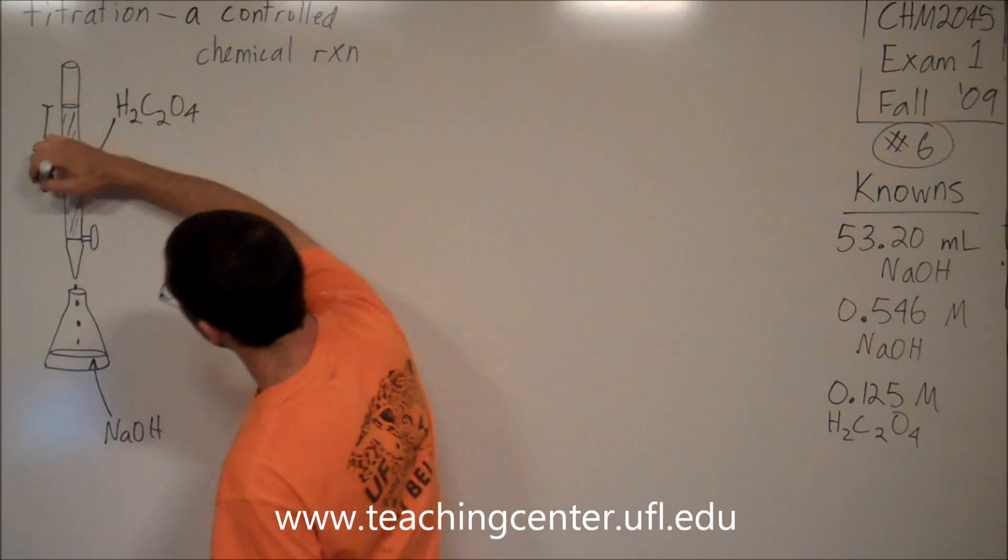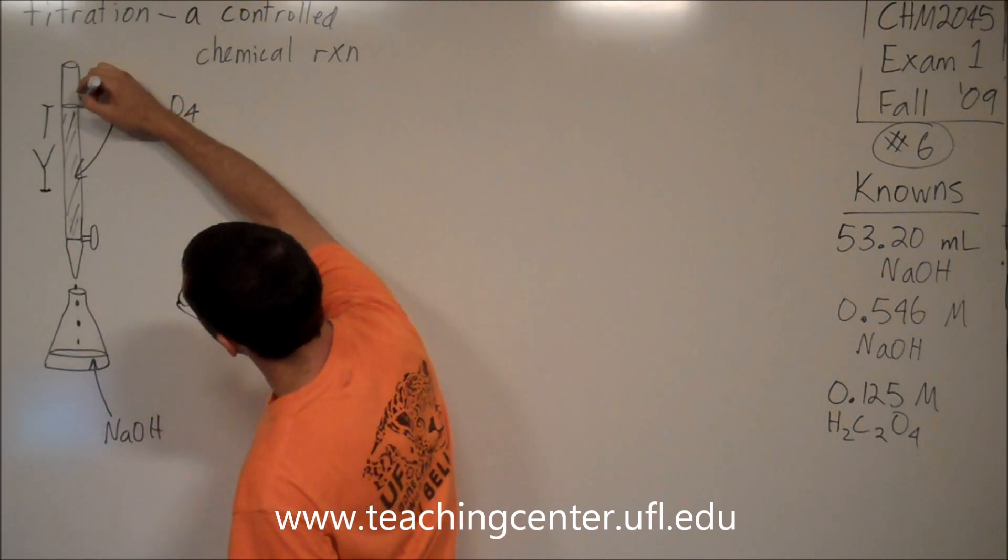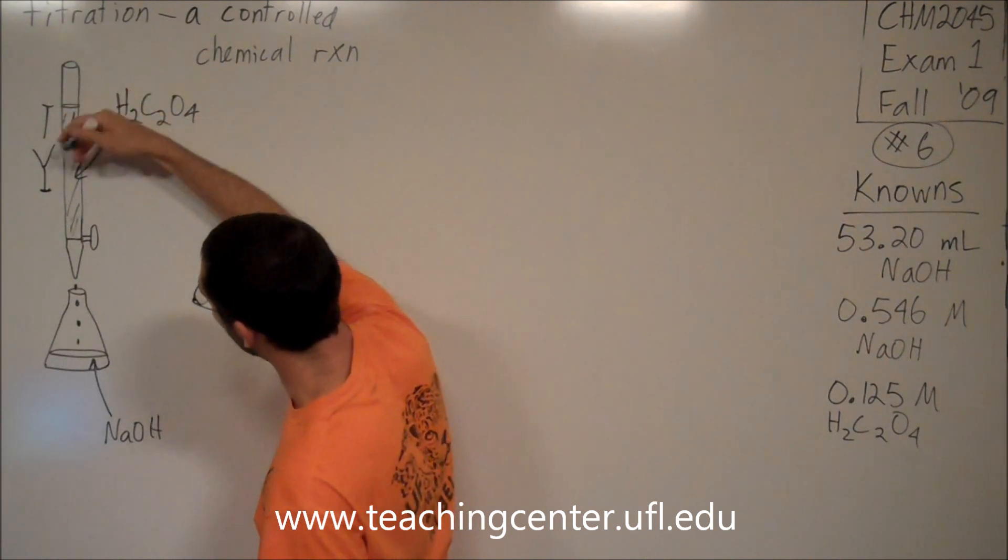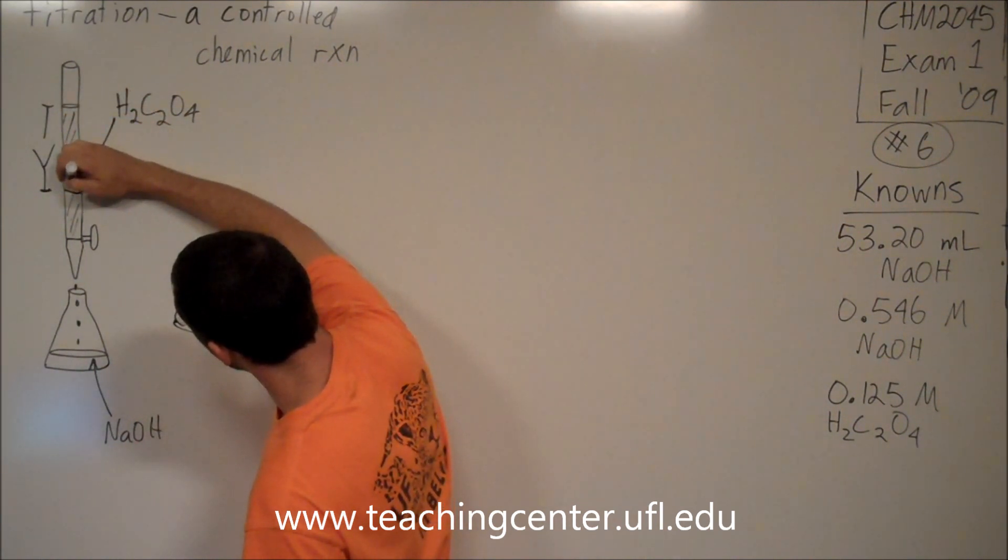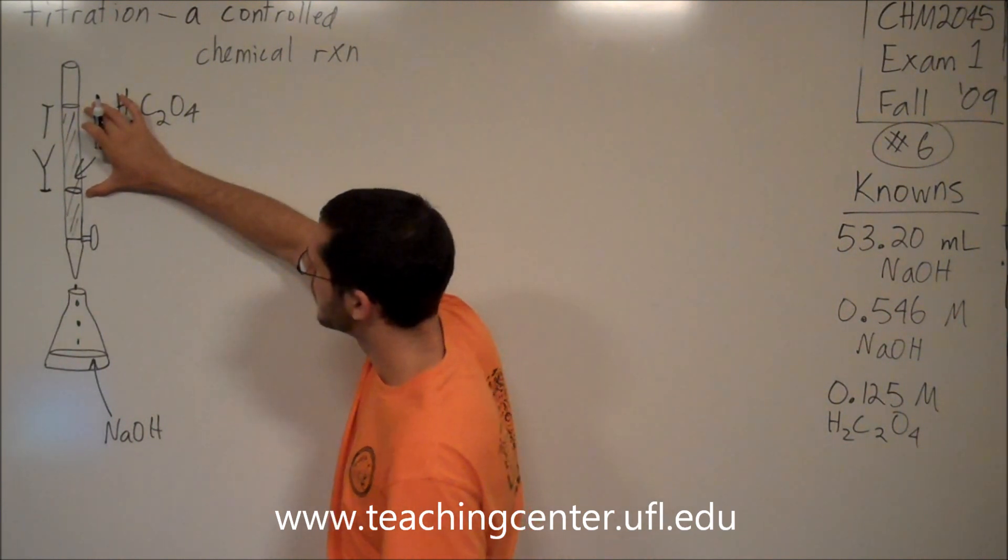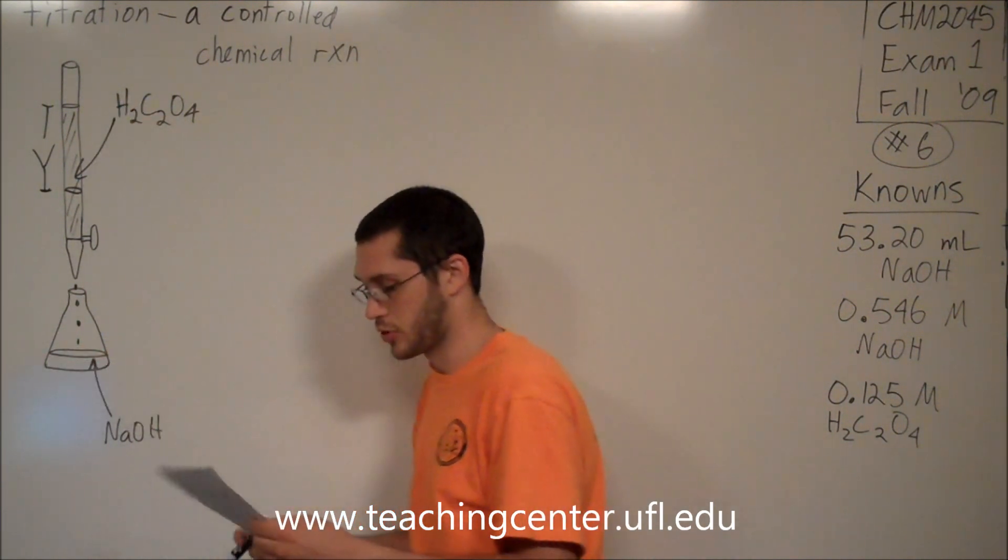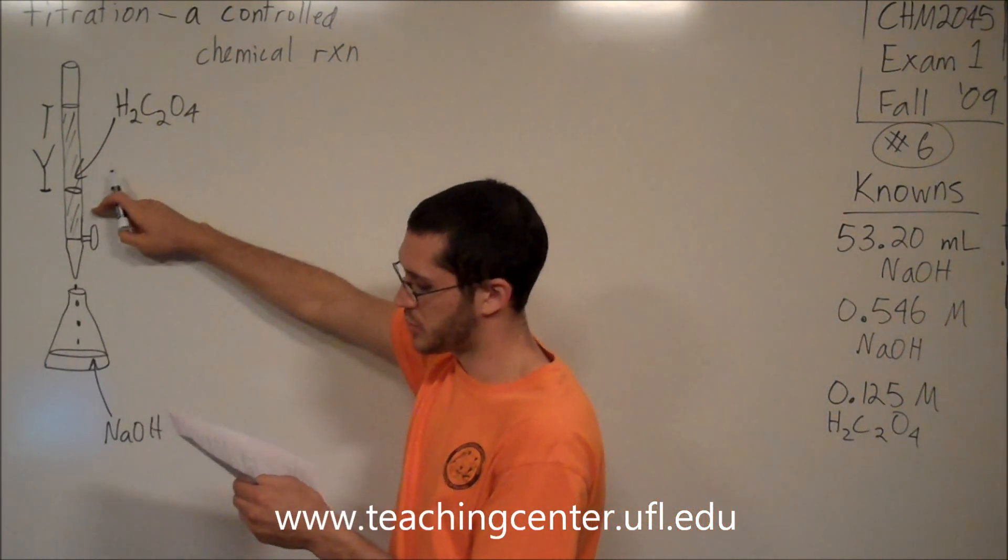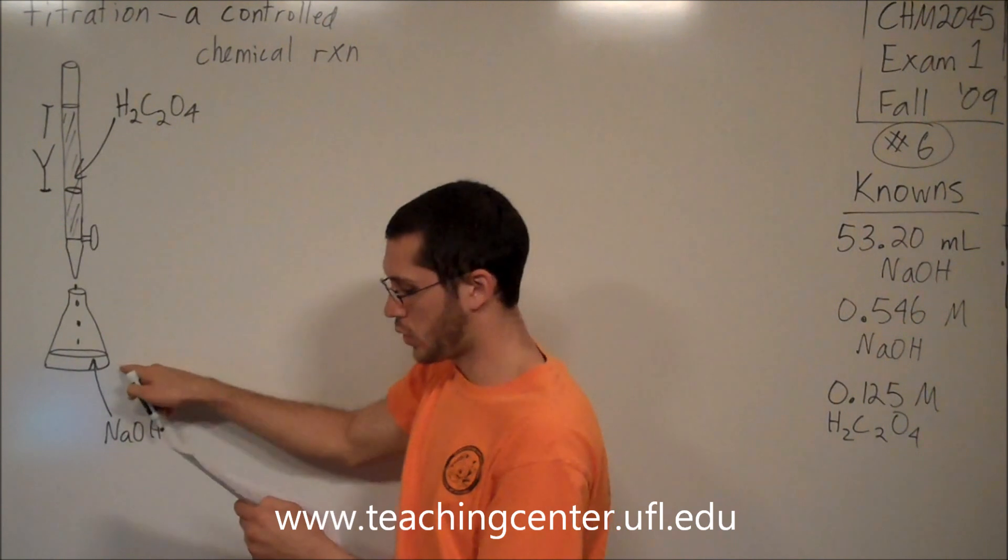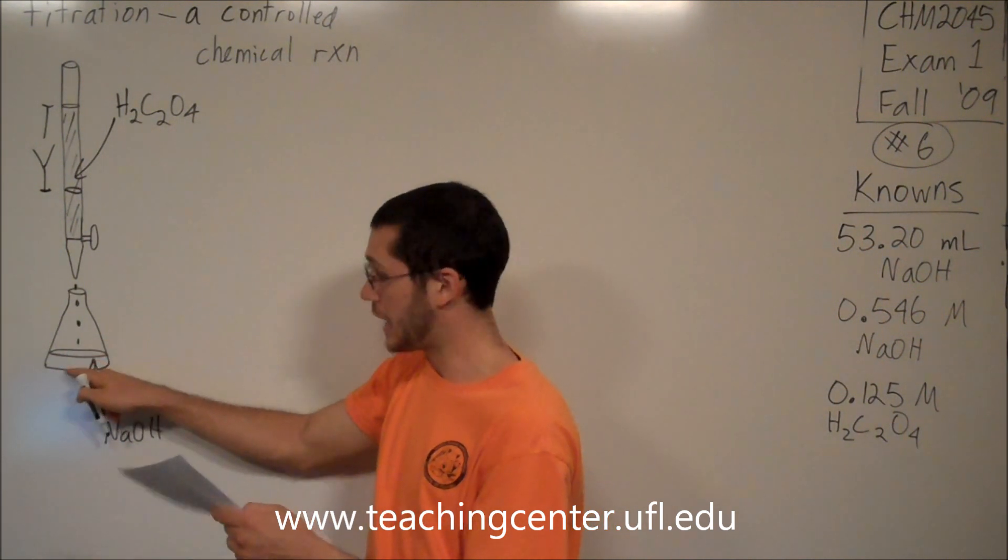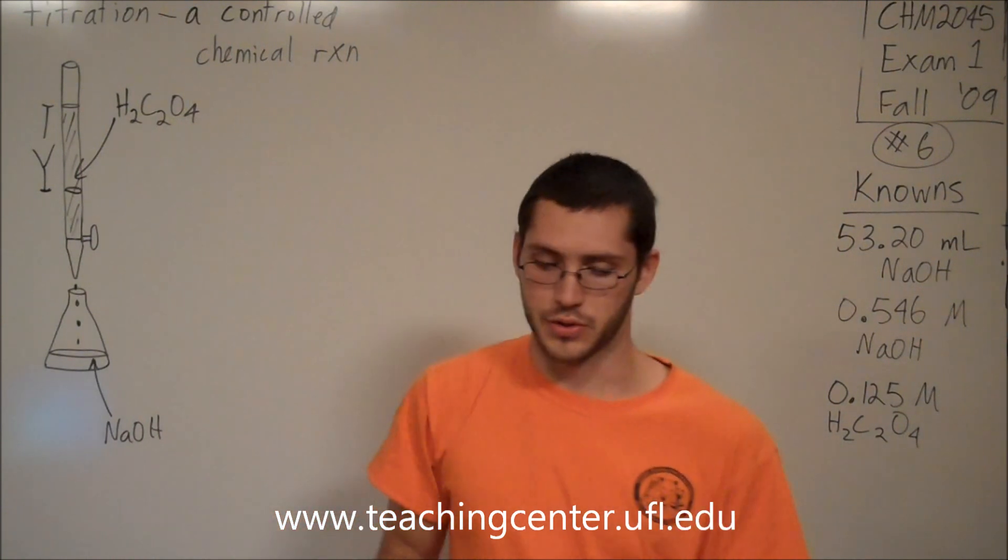The meniscus up here will drop down until it comes down here, and it's this much volume that was used to react away all the chemical in the Erlenmeyer flask. That's what we're looking for. We know the concentration of the oxalic acid in the burette. We know the volume, so we know how much sodium hydroxide is down here, and we also know the concentration of the sodium hydroxide.